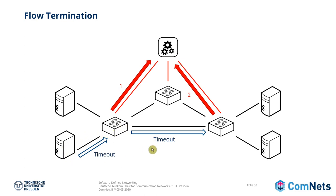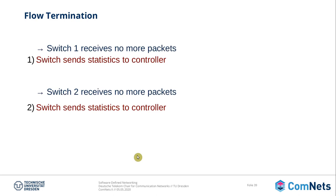What happens if there's no traffic anymore? As explained before, you can add a timeout to flow table entries so that after no packets are arriving, the flow table entries are removed and the switch informs the controller that there is no more traffic. The switch detects no more packets and can send statistics to the controller, which can then also remove flow table entries and policies.